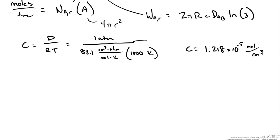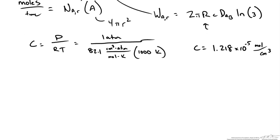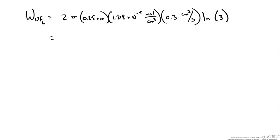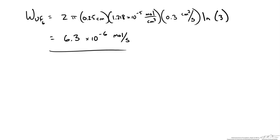Plugging in values: the diameter is given as 0.5 cm, so the radius is 0.25 cm; diffusivity is 0.3 cm²/s; concentration is 1.218 × 10⁻⁵ mol/cm³. Be sure to use radius, not diameter. Putting this all together gives a production rate of 6.3 × 10⁻⁶ moles per second of uranium hexafluoride away from the surface.